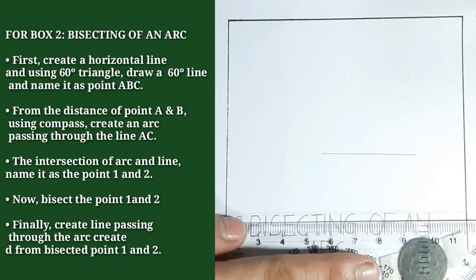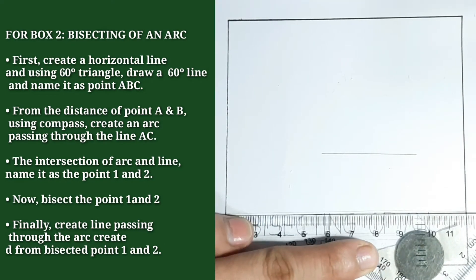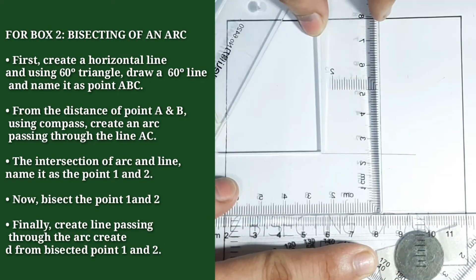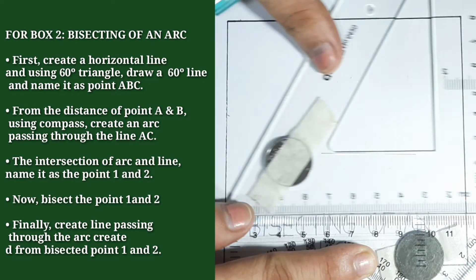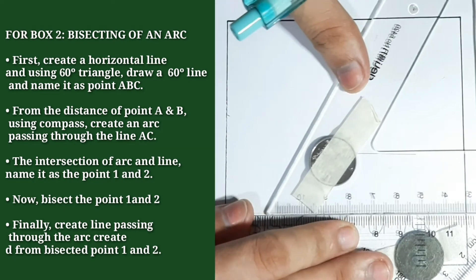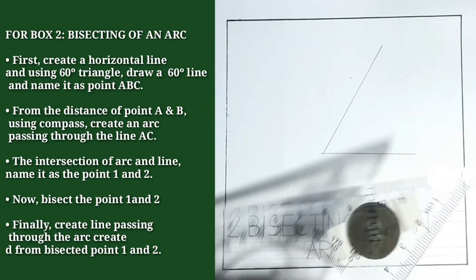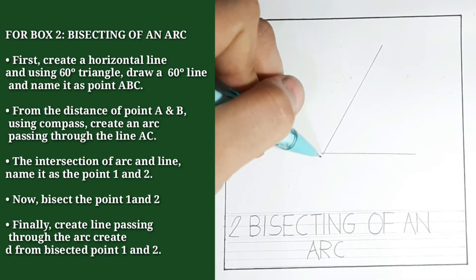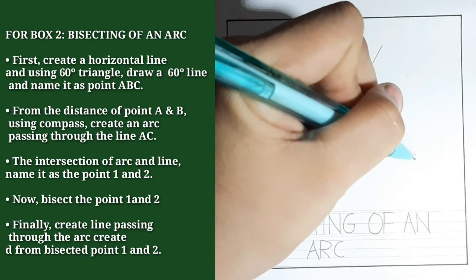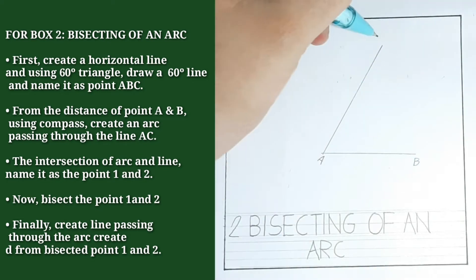Do not forget to use the other triangle as reference for your line. And now, we will name it by point A, point B, and point C. We will create an arc from point A to point B.